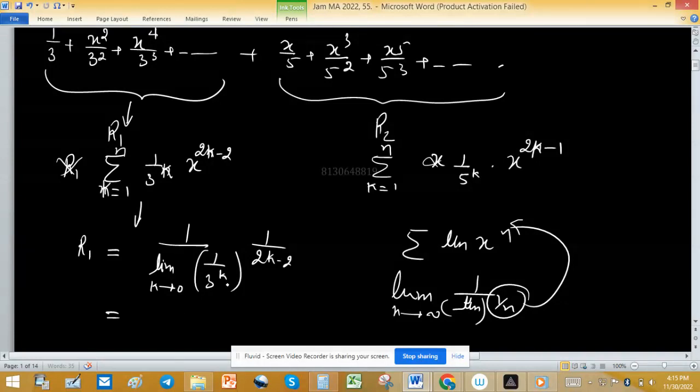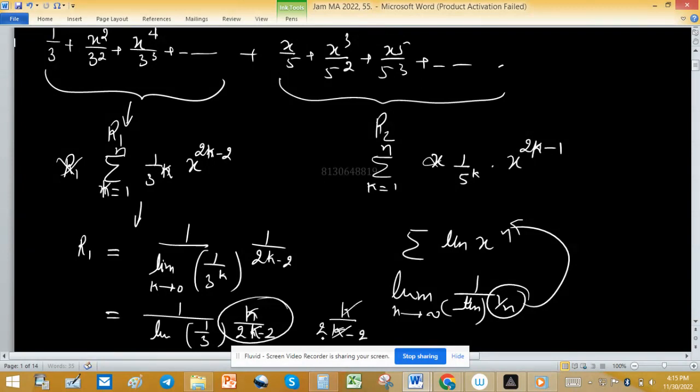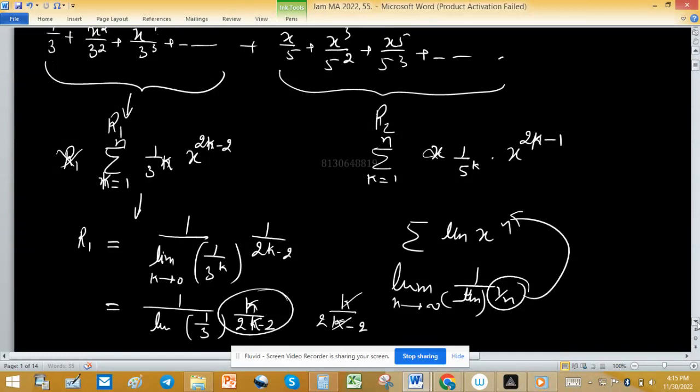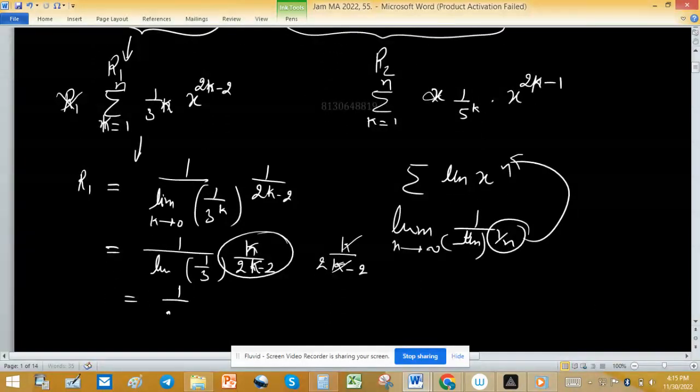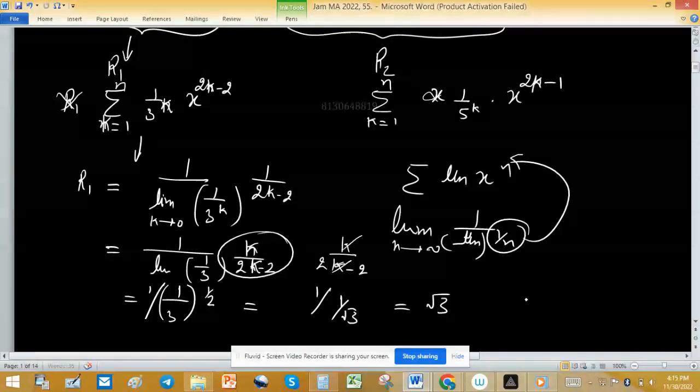So simplified form of this expression will be 1 upon limit 1 upon 3 raised to the power k upon 2k minus 2. And you can take k common from, if we simplify this one, so k upon 2k minus 2, so k cancel out from this one and 1 upon 2. So limit we are getting 1 upon 1 upon 3 raised to the power 1 upon 2 and this one I can write 1 upon 1 upon root 3, simply root 3.